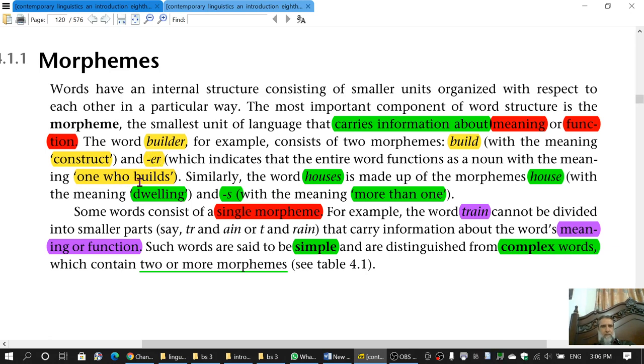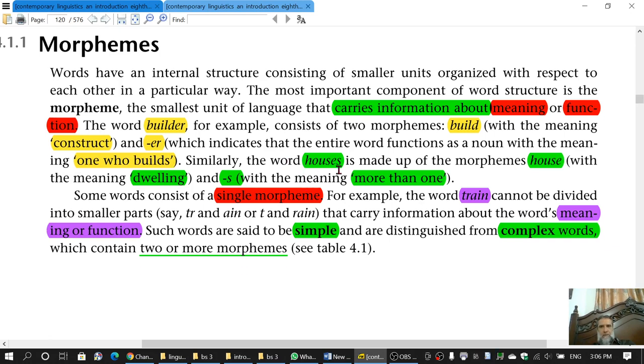The other example is houses. One morpheme is house, which has information about meaning, which means dwelling place, the place where people live. And S with the meaning more than one. So you can see it has information about meaning and function. S performs the function of making it more than one. This idea has already been learned.